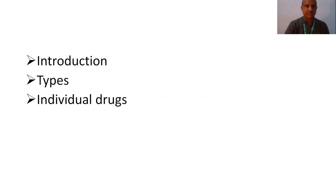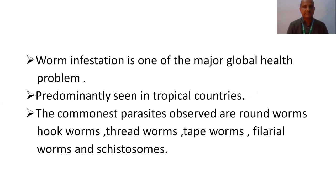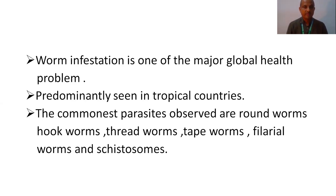The introduction part: helminthiasis is nothing but a worm infestation. Worm infestation occurs due to the infection of worms. Worm infestation is one of the major global health problems. It depends upon poverty, illiteracy, and lack of pure sanitation, and where there is poor water supply. It is mainly seen in tropical countries, depending upon the environmental conditions. The commonest parasites involved are roundworms, hookworms, threadworms, tapeworms, filarial worms, and schistosomes.